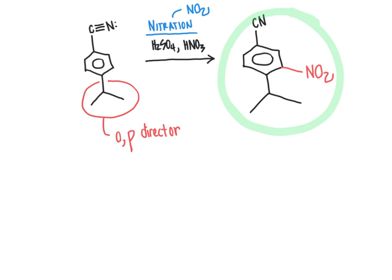That said, this reaction could possibly give a low yield overall because the isopropyl group is relatively bulky, creating some problems for the nitro group coming in. However, steric hindrance will definitely not force the nitro group into the meta position, because sterics are never as important as electronic effects — it may simply result in a lower overall yield for this reaction.